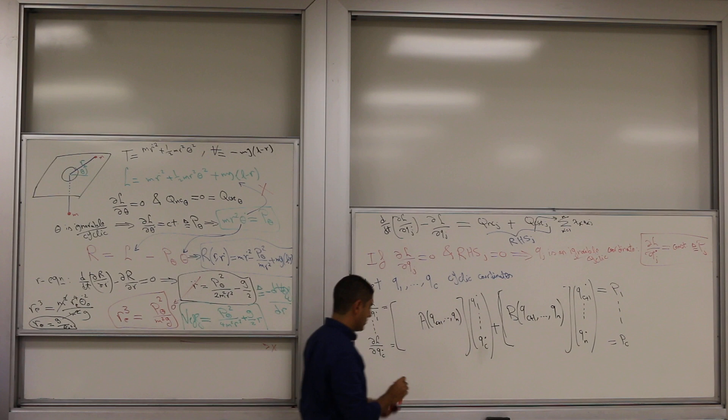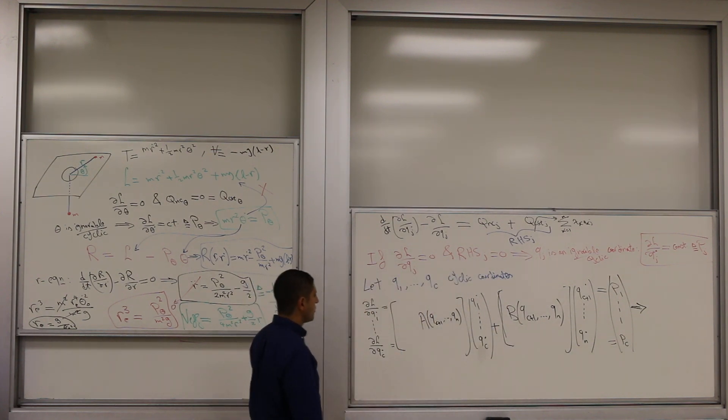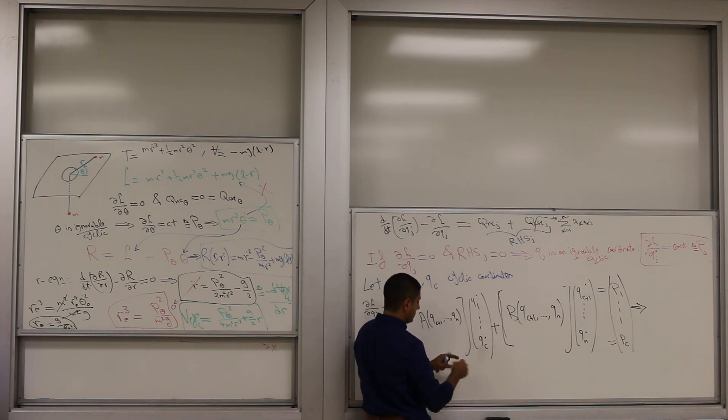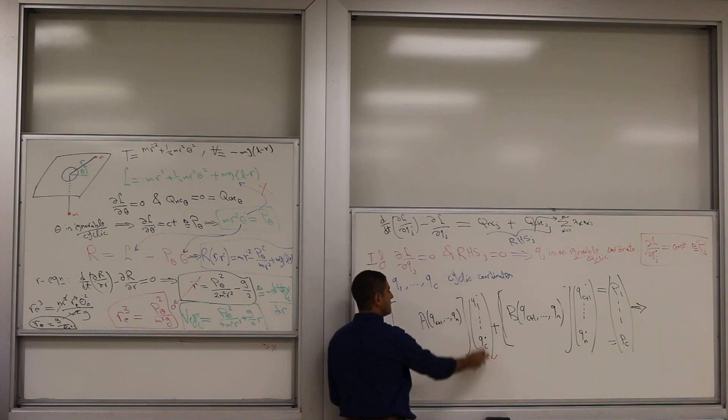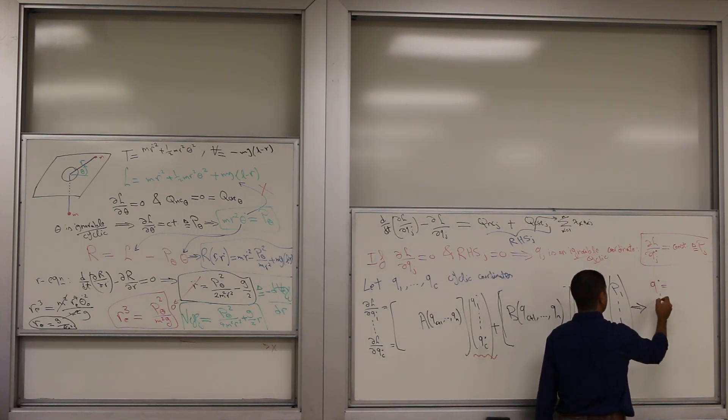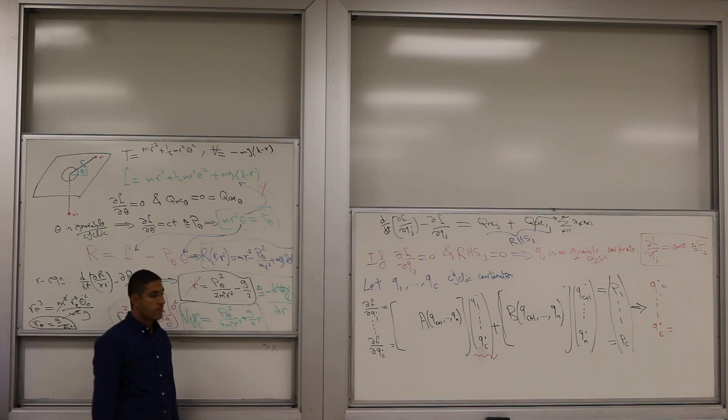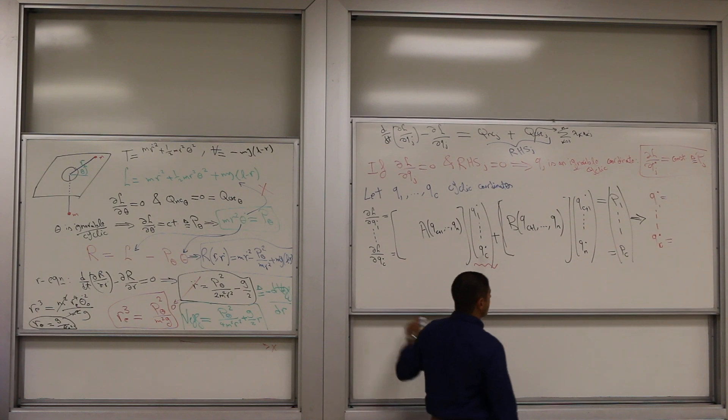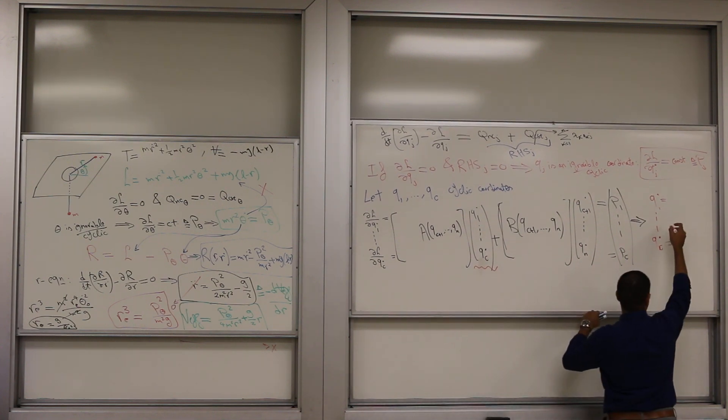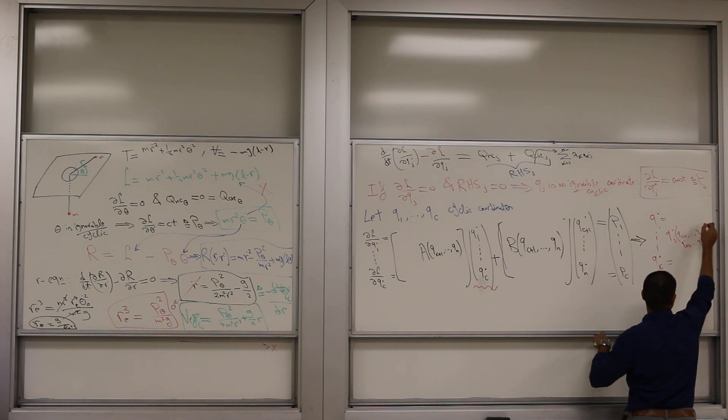I'm just giving you the general procedure. So you can use this system of equation to solve for this guy. This P minus these guys, premultiply by A inverse. So you get the q's, you get q1 dot up to qc dot. You get rid of all the q's, like here we got rid of theta dot. So this is a function of what? This is function of the other q dot and the other q's.